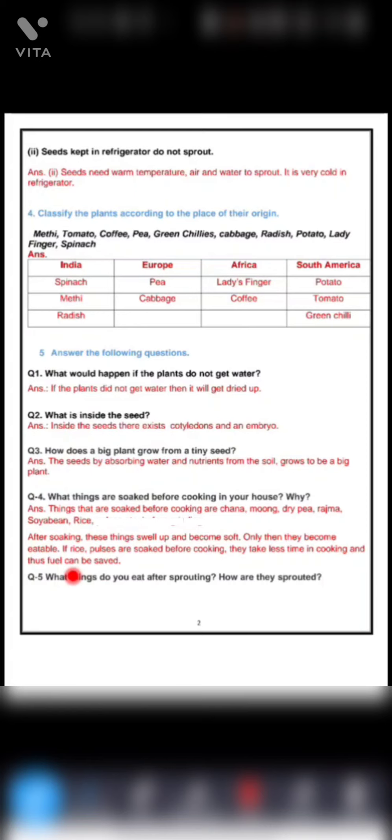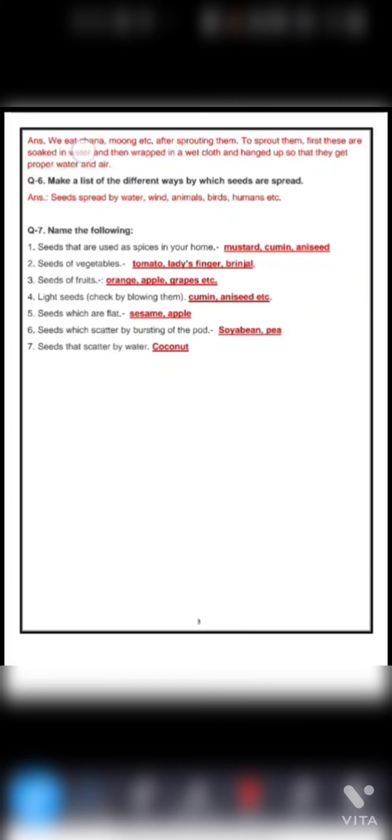Question number five. What things do you eat after sprouting? How are they sprouted? We eat chana, mung, etc. after sprouting them. To sprout them, first these things are soaked in water and then wrapped in a wet cloth and hung up so that they get proper air and water.